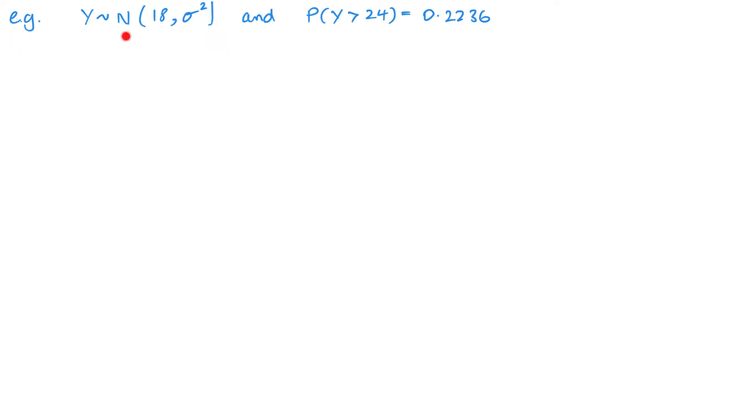Okay, similar example. This time we're finding the standard deviation or the variance, it doesn't really matter. The question will ask you, but it's the same. One's just a square of the other one. Here's the information we got, so let's sketch it out. So this time we have the mean is 18, we have 24, we know that's to the right. We want greater than, and it's the small value here of 0.2236.